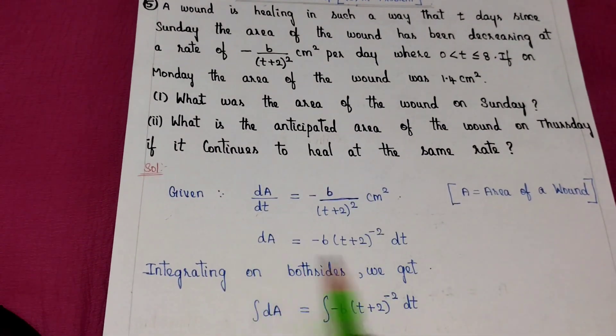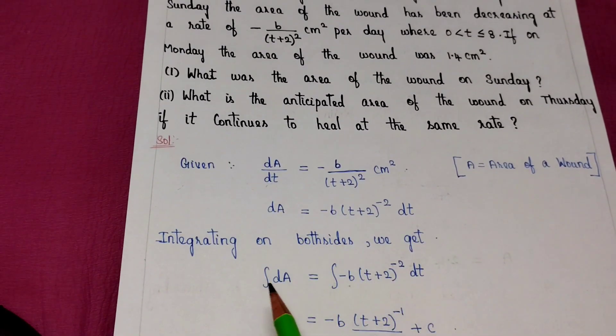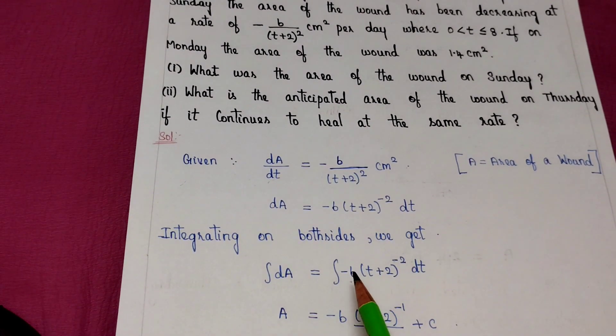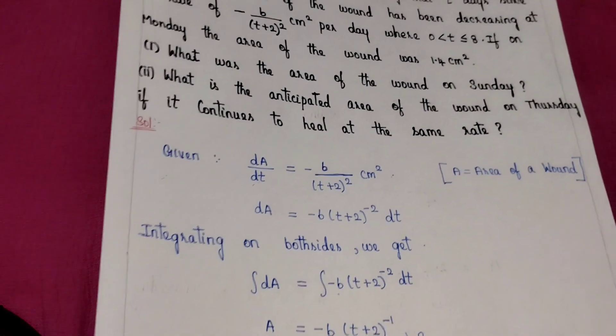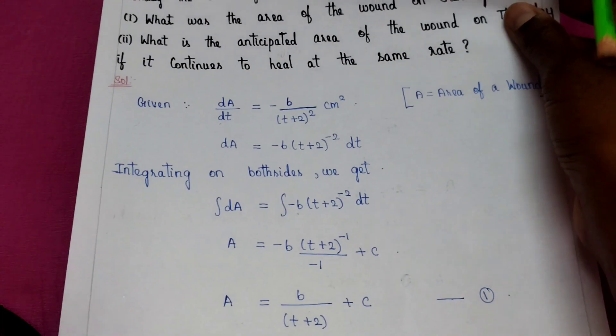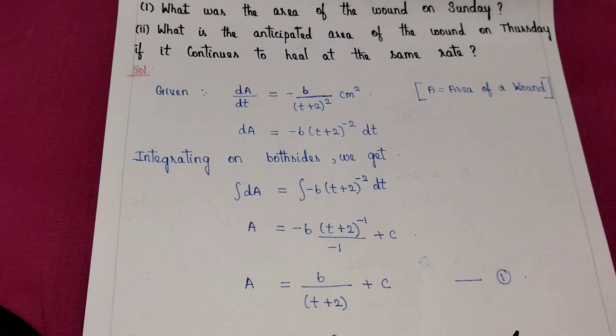Now we integrate both sides. So integral dA equals integral minus 6 t plus 2 whole power minus 2 dt. Minus 6 is constant, so this is minus 6 times t plus 2 whole power minus 2 integrated, which gives t plus 2 whole power minus 1 divided by minus 1 plus c.